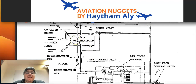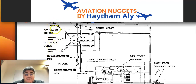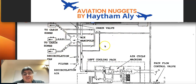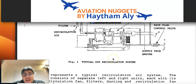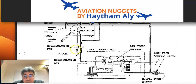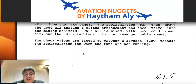This air is mixed with new conditioned air and then directed back into the passenger cabin zones — cockpit, forward cabin, and aft cabin. Pack one will supply the cockpit and pack two will supply the forward and aft cabin. The check valves are fitted to prevent reverse flow through the recirculation fan when the fans are not running.